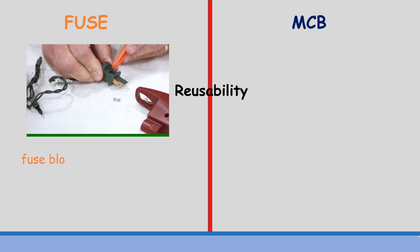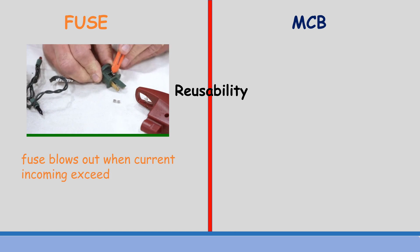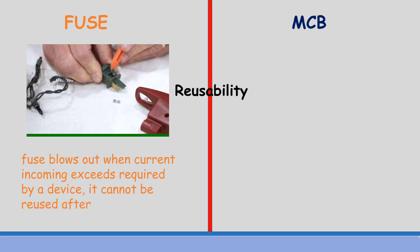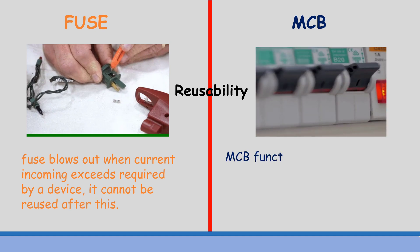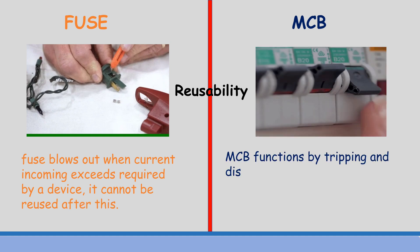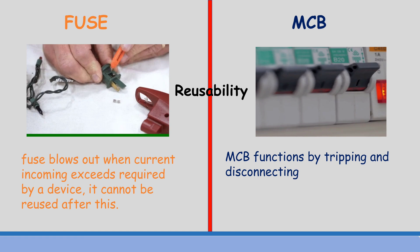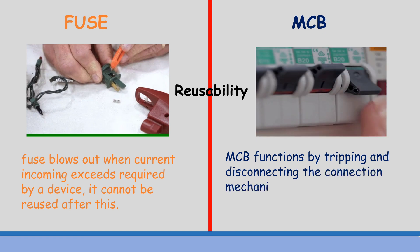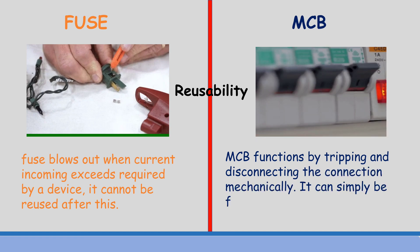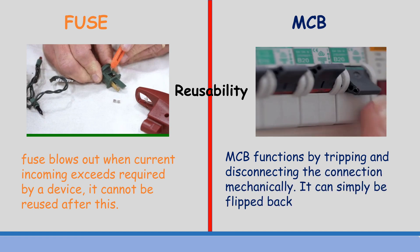A fuse blows out when the current exceeds what is required by a device, so it cannot be reused after this. An MCB functions by tripping and disconnecting the connection mechanically, so it can simply be flipped back on and hence can be reused severally.